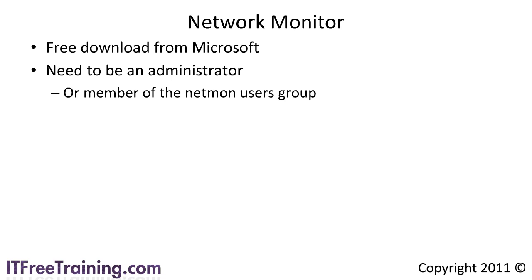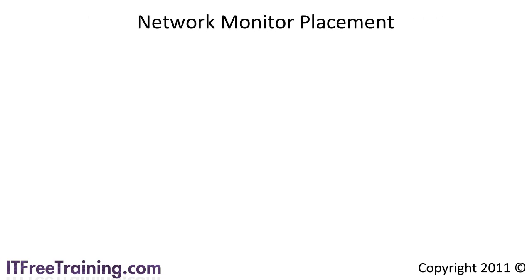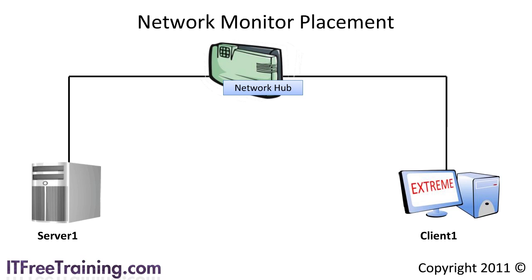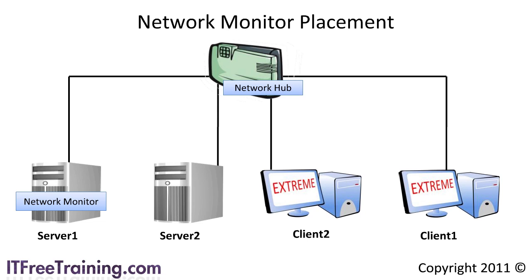Network monitor will allow you to capture and analyze any traffic that comes through your computer. Consider a network where a client is connected to a server via a hub. Since a hub broadcasts data destined for any computer to every other computer connected to it, you could capture data from any client on that hub. When network monitor is configured to capture traffic destined for different computers, it is said to be in promiscuous mode.